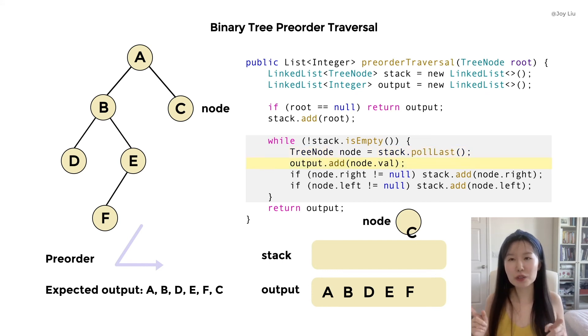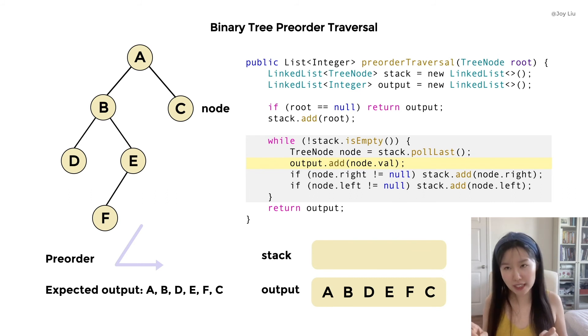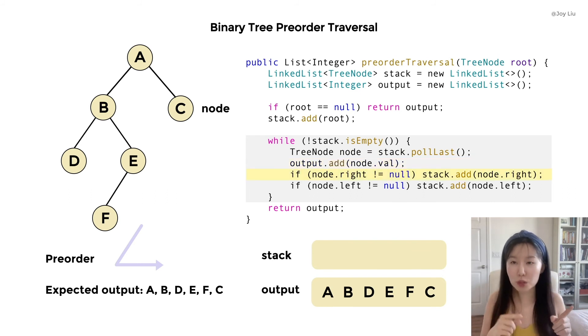We get the value of this node and add it to the output. No right child, no left child.